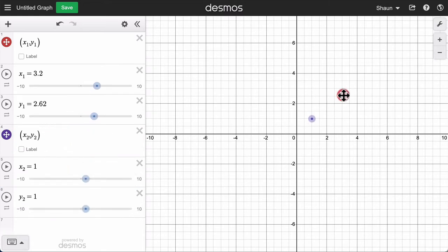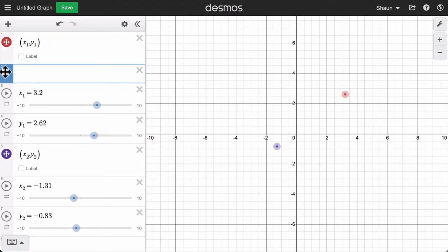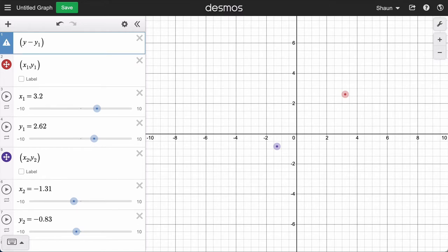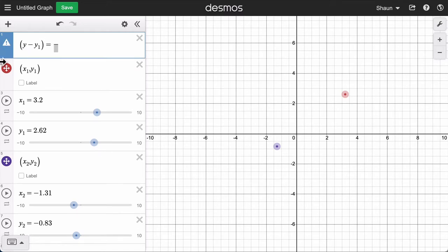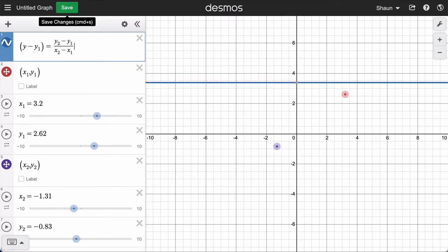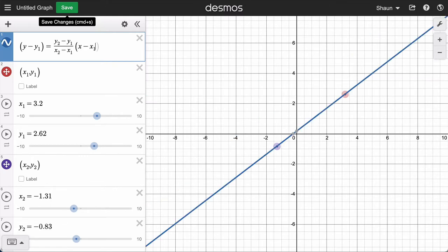Now I have two points and I want to connect them with a line. We use the point slope form. So it's going to be Y minus Y1 equals slope and slope in this case at these two points is going to be Y2 minus Y1 over X2 minus X1. That's our slope. And we want to multiply that by X minus X1. There's our line.